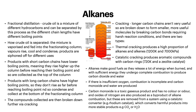The compounds collected are then broken down further via cracking, because long carbon chains aren't always the most useful. Cracking breaks longer chains into smaller, more useful molecules by breaking carbon bonds under harsh reaction conditions. Thermal cracking produces a high proportion of alkanes and alkenes at 1,200 Kelvin and 7,000 kilopascals. Catalytic cracking produces aromatic compounds with carbon rings at around 720 Kelvin, normal pressure, and a zeolite catalyst.